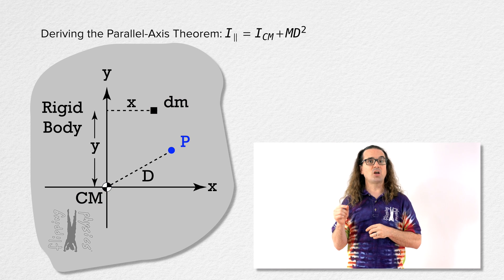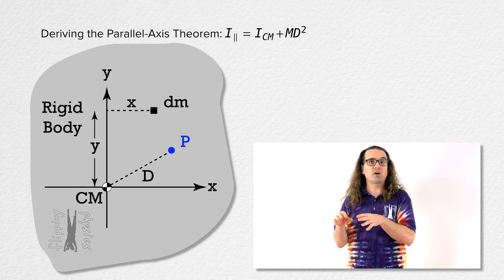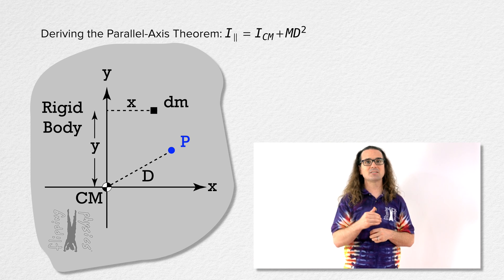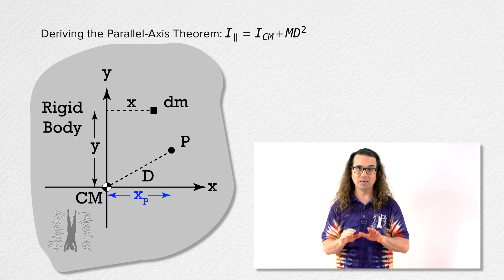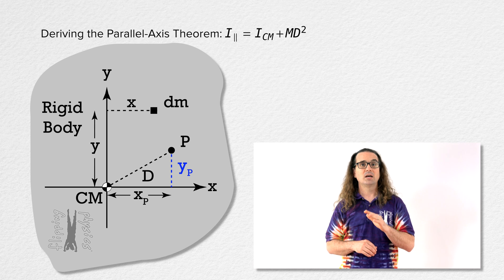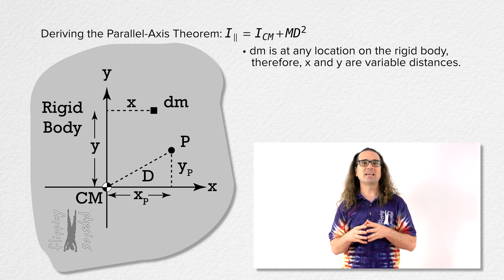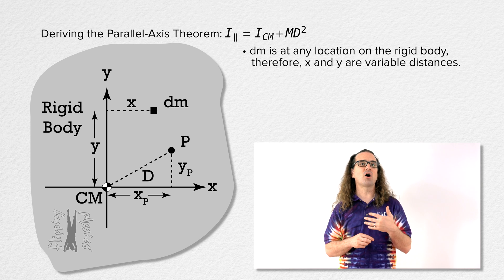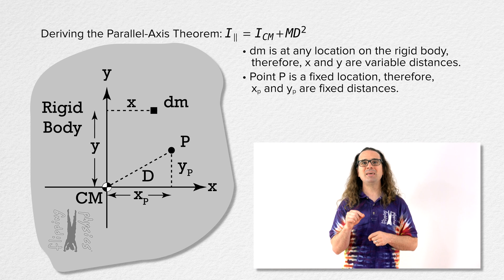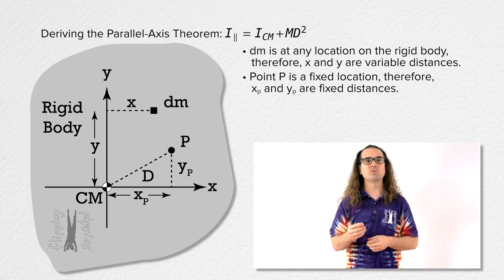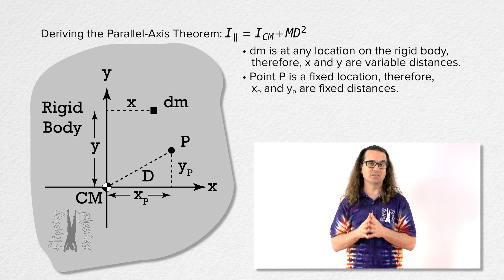Point P, the location of the axis about which we are determining the rotational inertia of this object, is located a fixed distance in the x direction, x sub p, and a fixed distance in the y direction, y sub p. Because dm is a representative piece of this rigid body, its location could be anywhere on the object, and therefore x and y are variables. However, point P is a fixed location on the rigid body, and x sub p and y sub p are fixed distances.